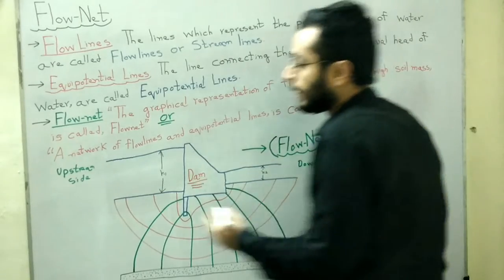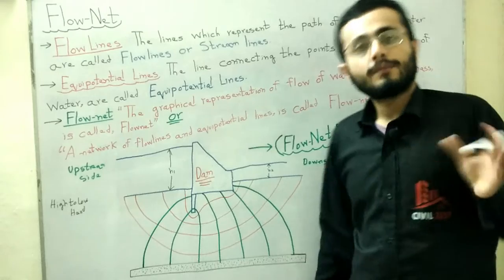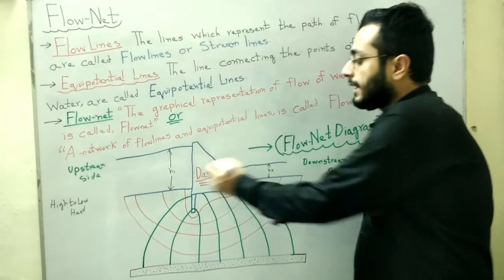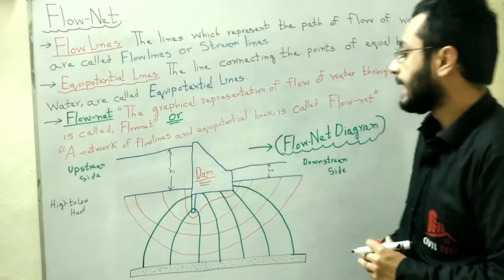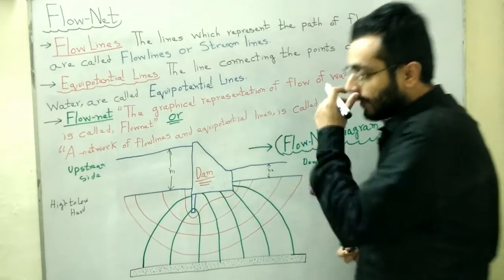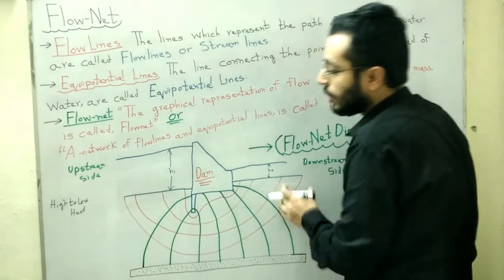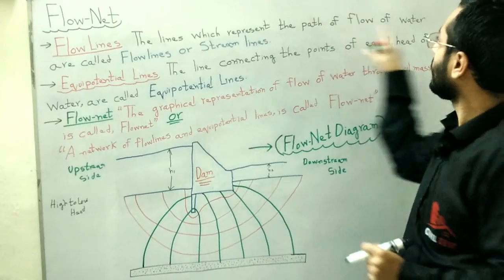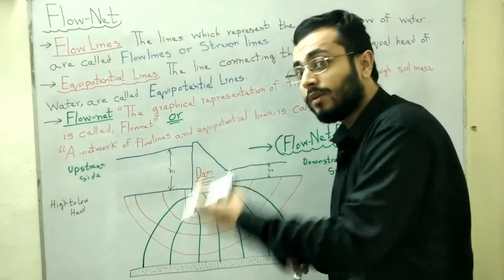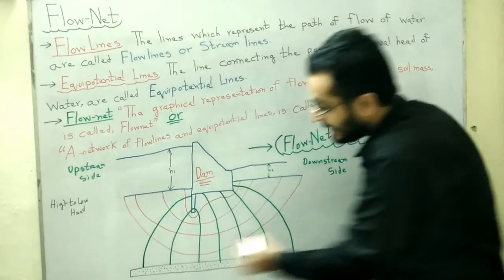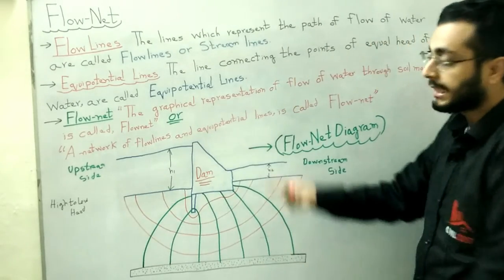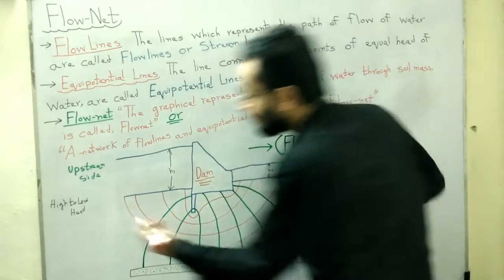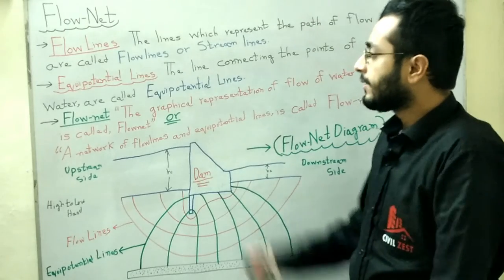Water moves from high head to low head. In the complete flow net diagram, here is our gravity dam with h1 high head and h2 low head. The red lines propagating from upstream to downstream are our flow lines or stream lines — they represent the path of flow of water moving from higher to lower head.